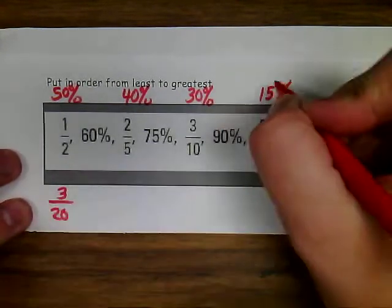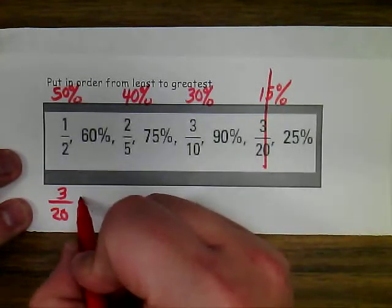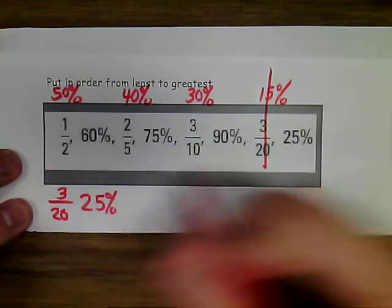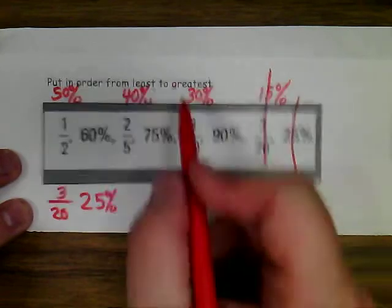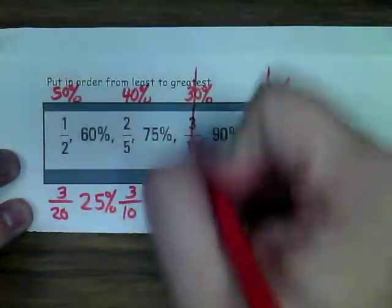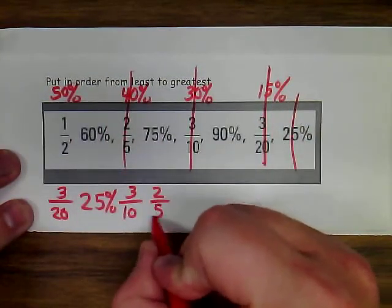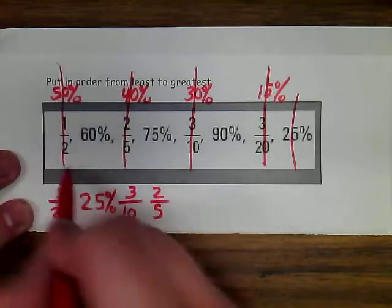So, now I would know that this right here will be the smallest. So, 3 over 20 will be the smallest. Then, my next smallest will be 25%. Then, my next smallest will be 30%, or 3 tenths. My next smallest will be 40%, or 2 fifths. Then, I've got 50%, 1 half.